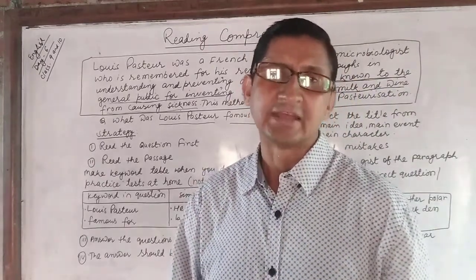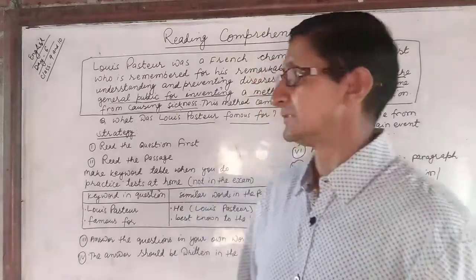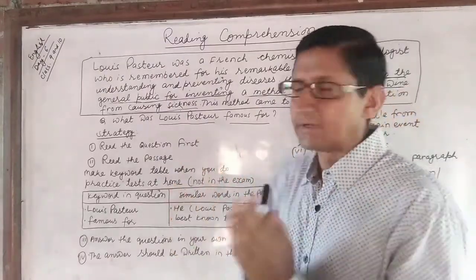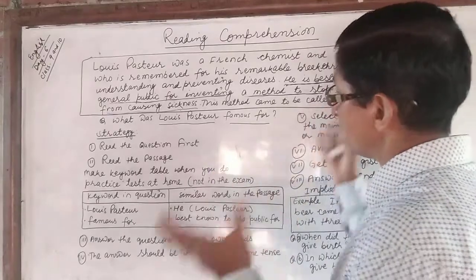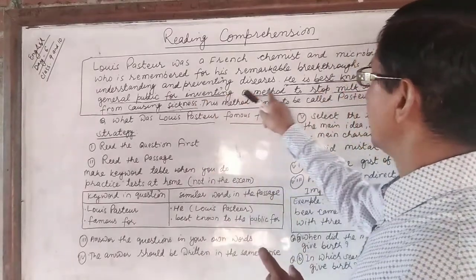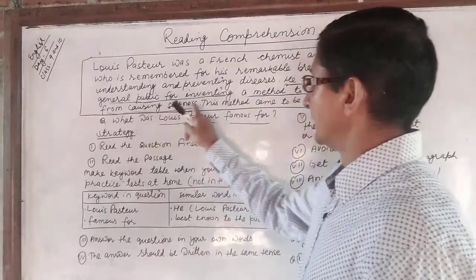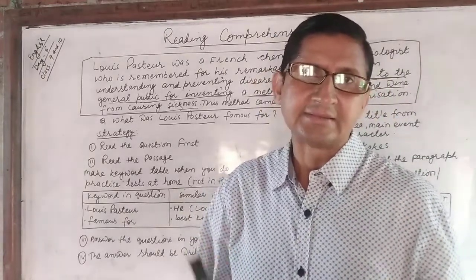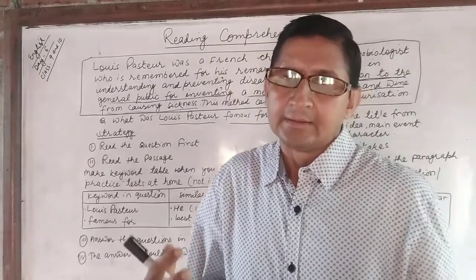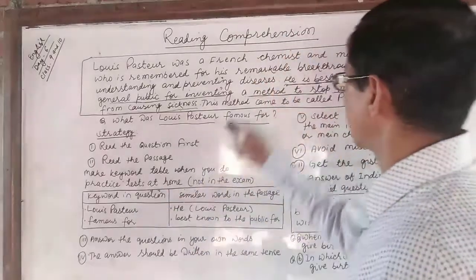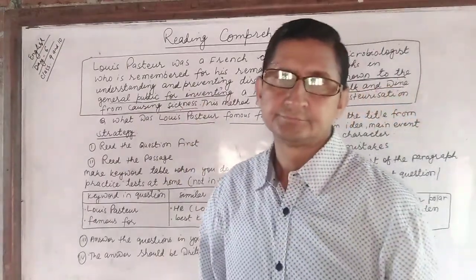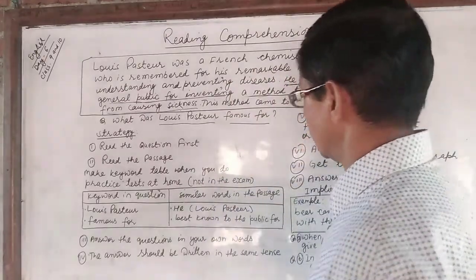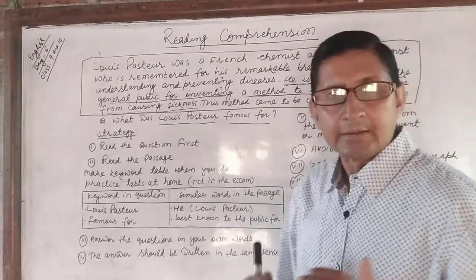Answer in a full sentence. For example, the question is: 'What was Louis Pasteur famous for?' You have to use the keywords from the question: 'Louis Pasteur was famous for inventing a method to stop milk and wine from causing sickness.' This is the complete answer, written in a full sentence and in your own words. You should not copy the same sentence from the passage. This is the third strategy.